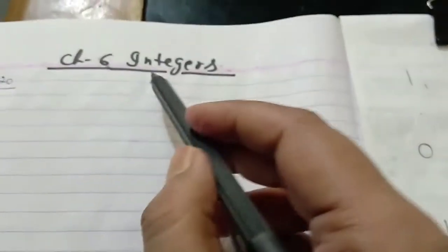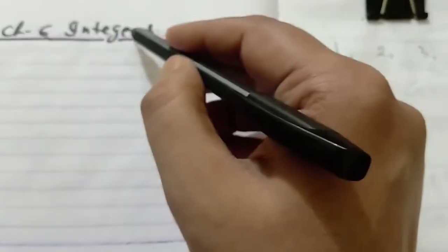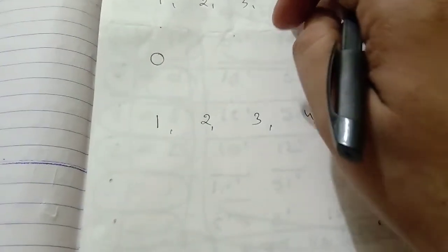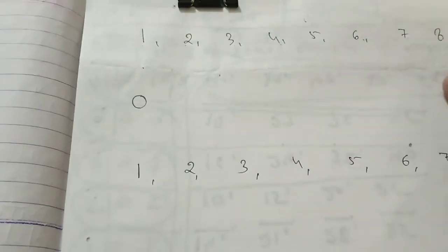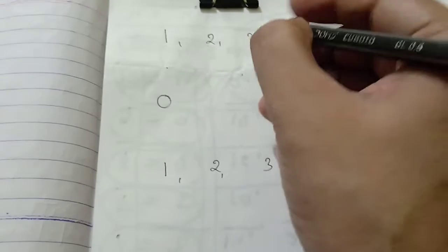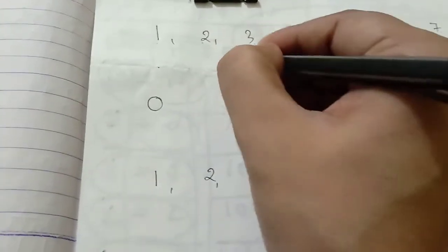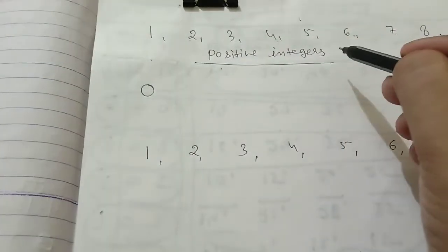Since we are going to understand integers, before understanding integers, let's have a close look and understand these numbers again. You are thinking that these numbers are the same, but I will make a difference. 1, 2, 3, 4, 5, 6, 7, 8, and three dots tell you that the numbers continue and never end. These numbers are called positive integers. Remember, these numbers are called positive integers.